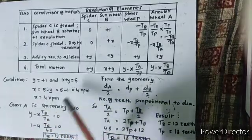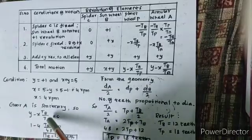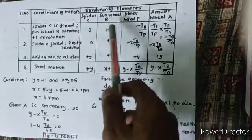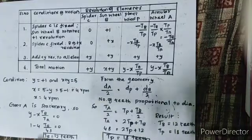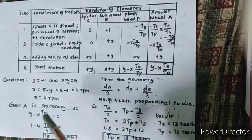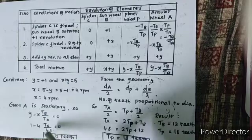When gear A is stationary, Y minus X TB by TA equals 0. So Y is equal to X TB by TA. This is from the first step.